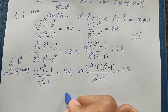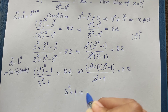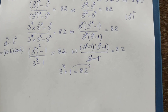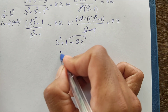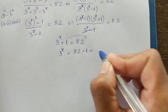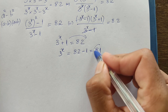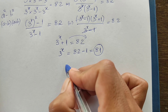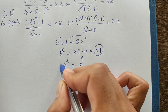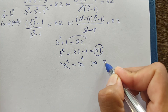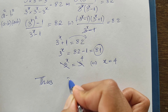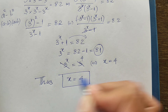After simplification we get 3 to the power h plus 1 equals 82. Moving 1 to the right-hand side, we get 3 to the power h equals 82 minus 1, which equals 81. We know that 81 equals 3 to the power 4. So 3 to the power h equals 3 to the power 4, and therefore h equals 4. Thus h equals 4 is our solution.